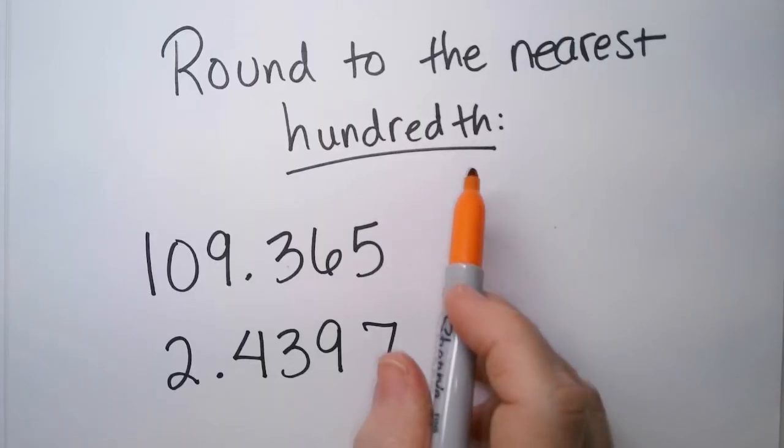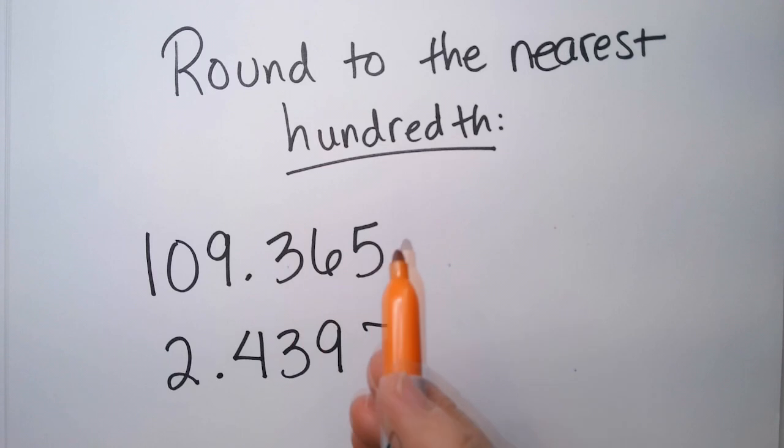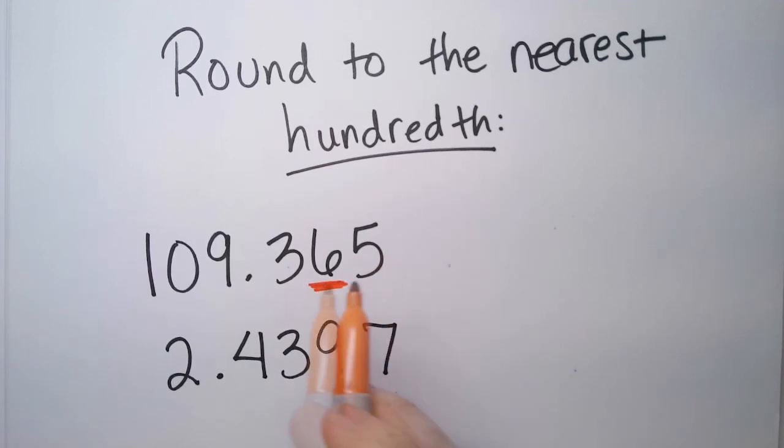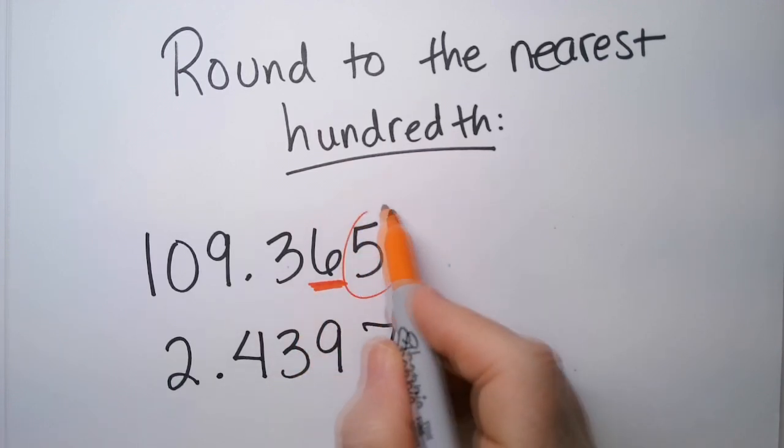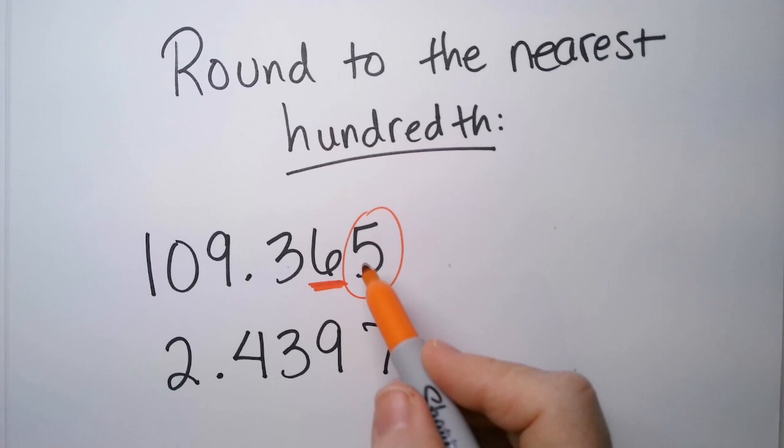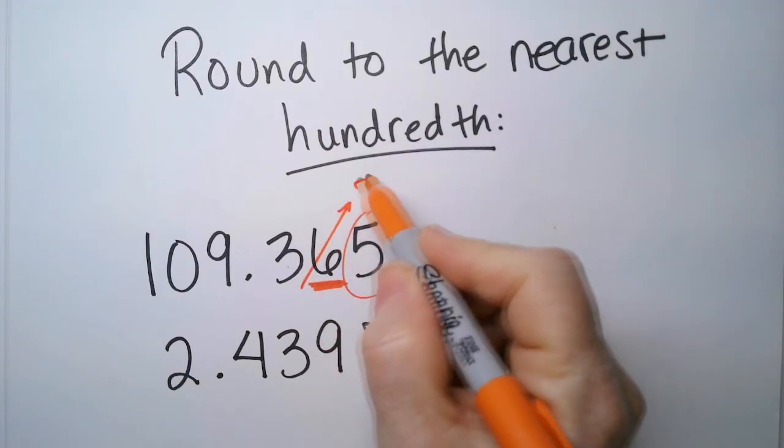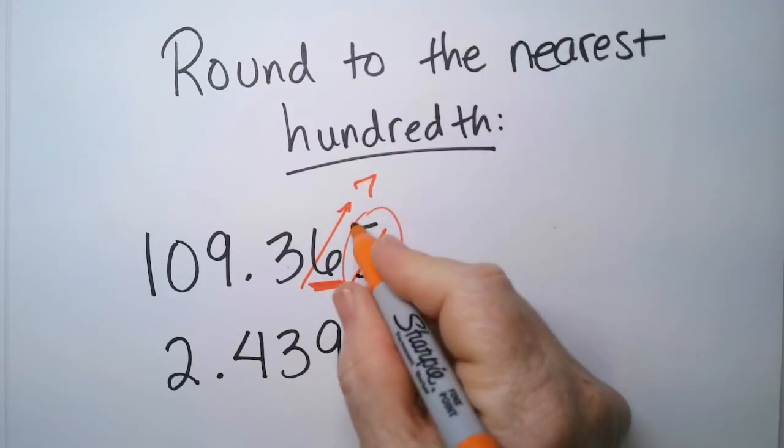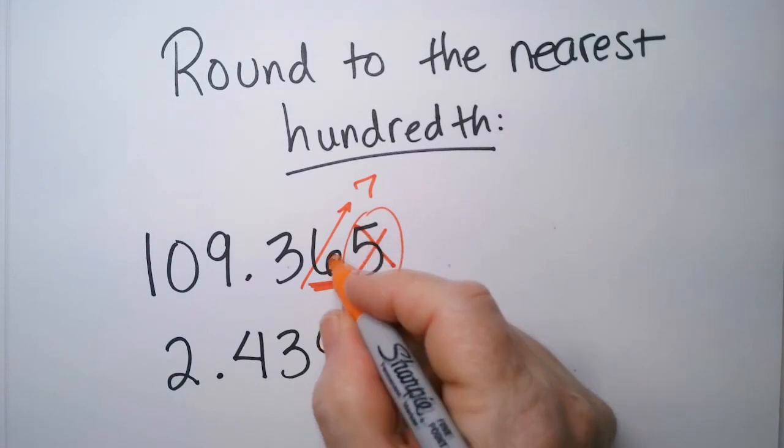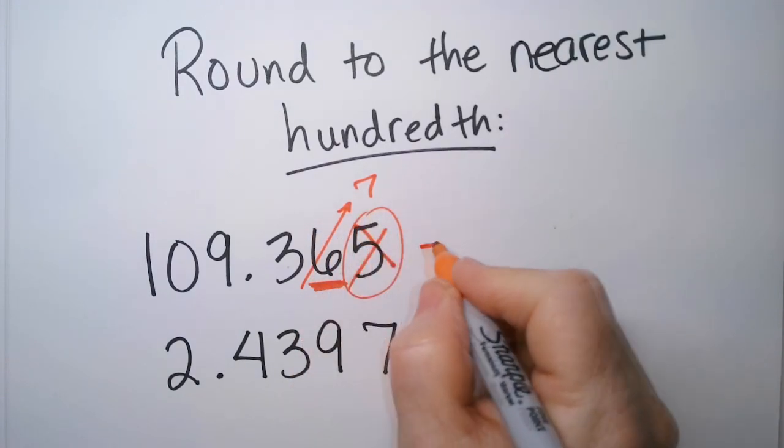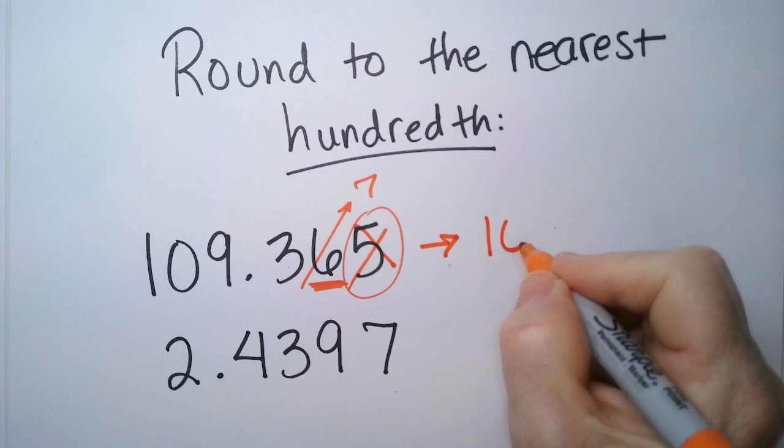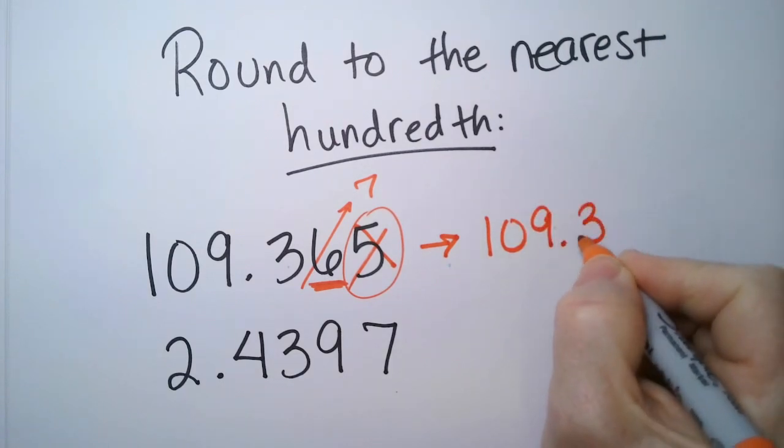Let's round to the nearest hundredth. So the first thing we do is find the hundredths place, and on the top number, it's here, it's the 6. Then we look one step to the right, we see a 5 here. This is 5 and above, so that means this goes up to a 7. We still get rid of the 5. We're just peaking to see whether this should stay a 6 or be bumped up to a 7. So this becomes 109.37.